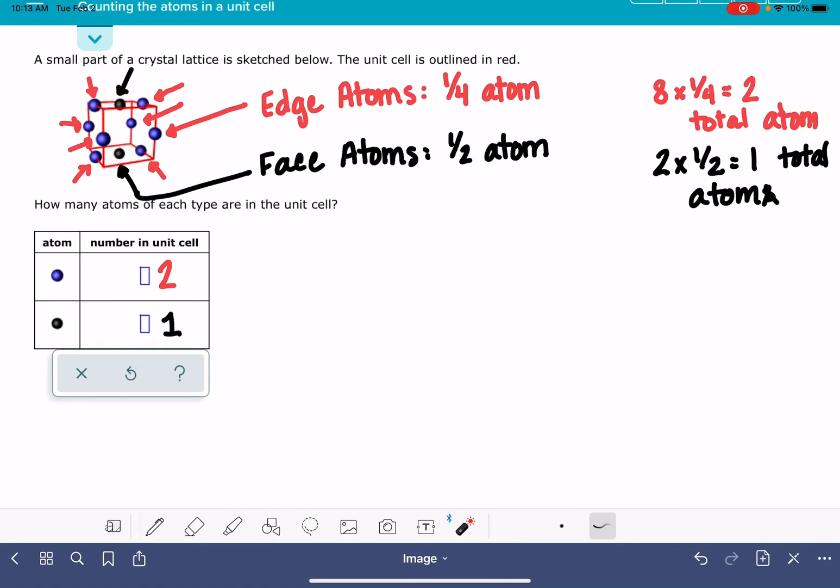The only type that is not in this particular figure that you might come across would be an atom on the corner. I don't have any corner atoms in this figure. A corner atom would be located right on the corners, in these spots right here. Corner atoms, one eighth of their body is inside the unit cell and the other seven eighths is outside. So if you have a corner atom, you're going to count each corner atom as just one-eighth of an atom.